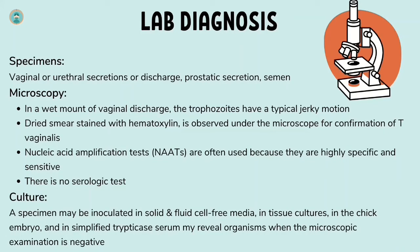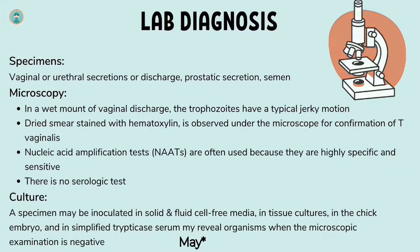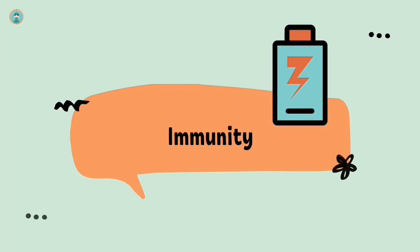For culture, a specimen may be inoculated in solid and fluid cell-free media, in tissue cultures, in the chick embryo, and in simplified trypticase serum. Culture may reveal organisms when microscopic examination is negative.